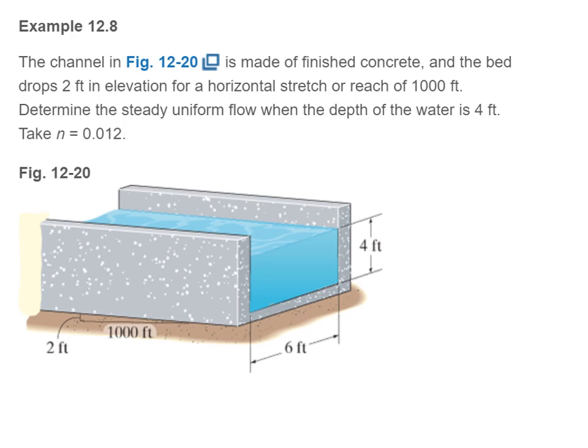Let's look at example 12.8. This channel is made of finished concrete, and the bed drops two feet in elevation for a horizontal stretch of 1,000 feet. Determine the steady state uniform flow when the depth of the water is 4 feet. Take n to be 0.012. Here shows a little schematic of the flow. We have a 2 foot drop over 1,000 feet. That determines the slope. 6 foot wide, and the water is currently 4 feet deep.